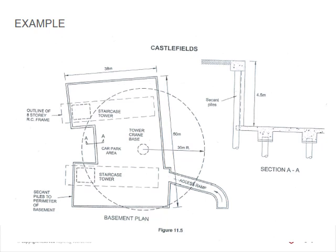The basement excavation takes place between the secant pile wall. Access to the five-meter deep basement is via a proposed access road, and pedestrian access is via scaffolding access towers. The volume of excavation material is approximately 9,800 cubic meters. The program duration for works is 20 days — from this they calculate they need approximately 25 truck loads per day.